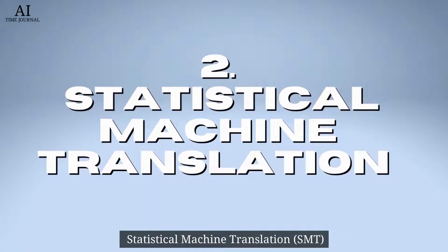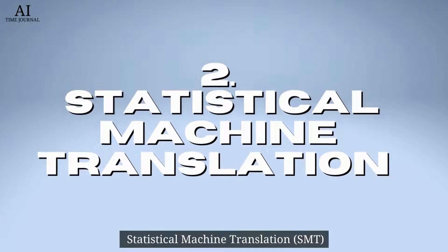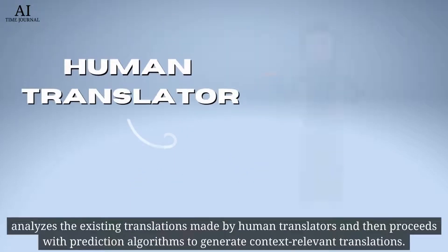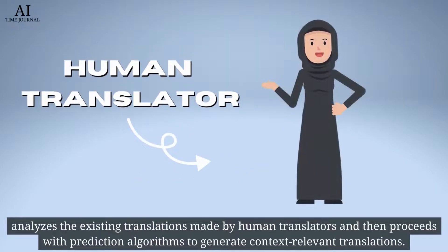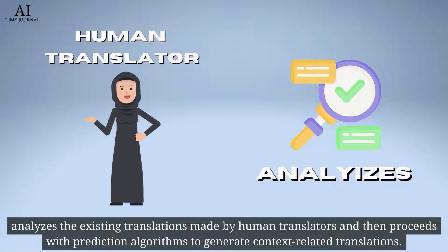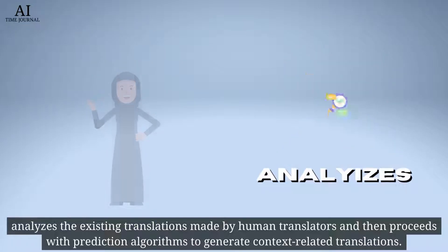Statistical machine translation analyzes the existing translations made by human translators, and then proceeds with prediction algorithms to generate context-related translations.